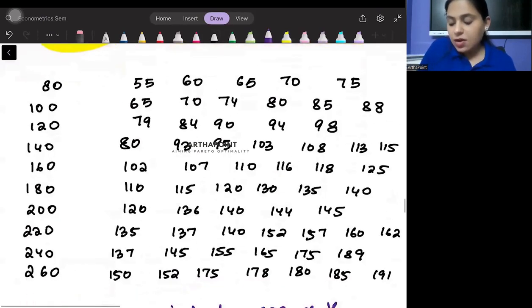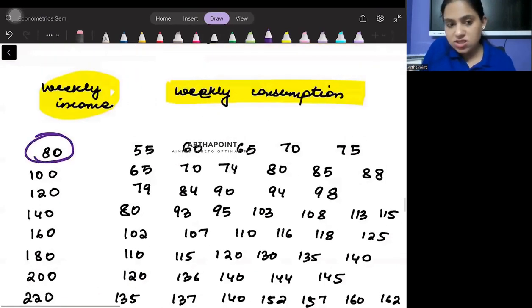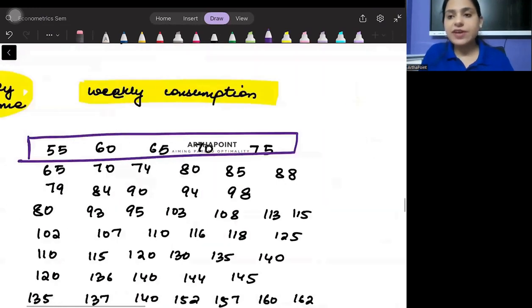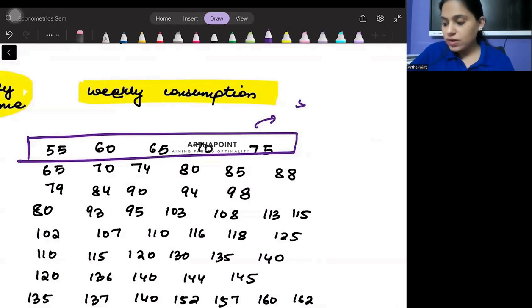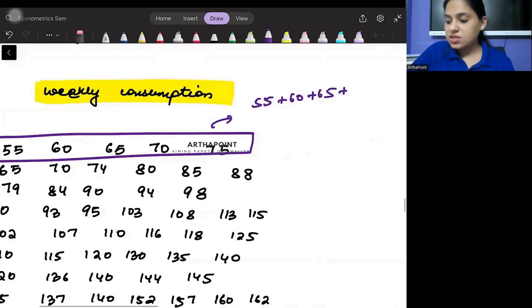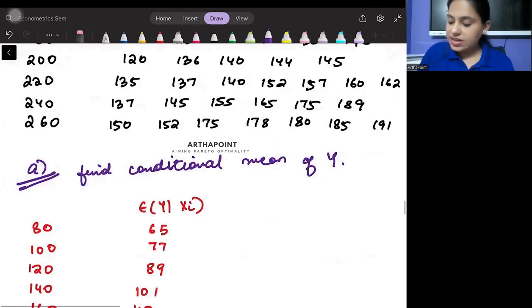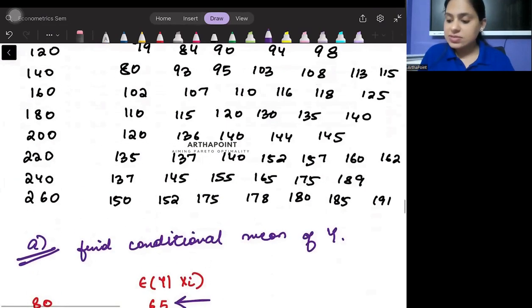It's very simple. You will hold 80 constant, and for the values against 80, you will find the mean value. So you will have 55 plus 60 plus 65 plus 70 plus 75 divided by 5, and when you do this you will get the answer at 65.